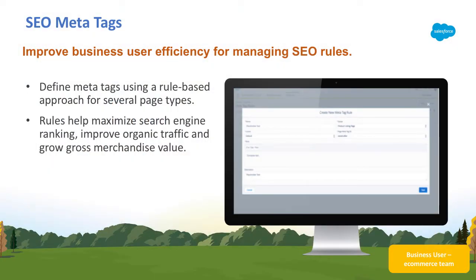An analysis of Commerce Cloud customer sites revealed that the majority of site traffic, sales, and conversions come via organic search. In fact, nearly 40% of online shoppers begin their product search with a search engine.